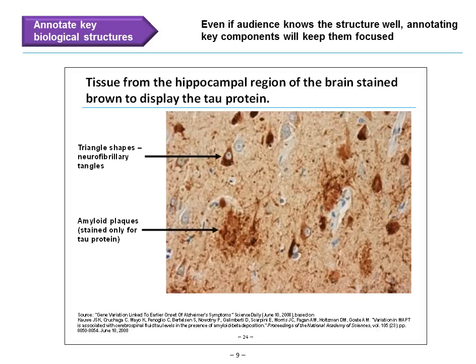Next, annotate key biological structures — even if your audience knows what the structure is, annotating it will keep them focused. Here's an example: tissue from the hippocampal region of the brain stained brown to display the tau protein. We annotate the two major structural components — the triangle shapes, which are neurofibrillary tangles, and the amyloid plaques stained only for tau protein. We immediately see what the most important structures are; they are annotated, we know what we're looking at, and there's no ambiguity.